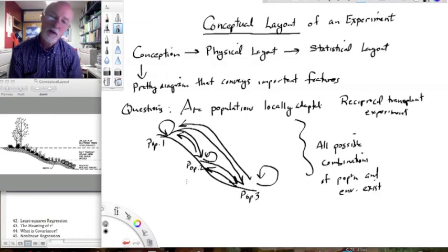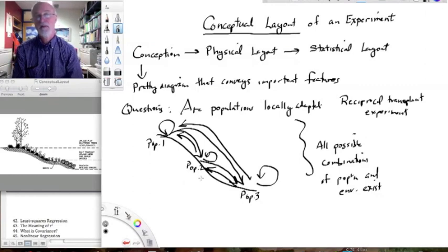There should be a total of nine arrows there. Okay. So, this is a conceptual layout of the experiment. And, you know, conceptual layouts may not even be necessary for a particular experiment.